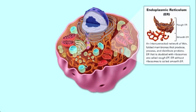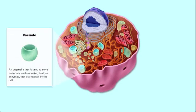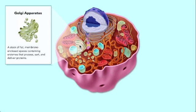Let's move on to vacuole. Vacuole organelles that are used to store materials such as water, food, or enzymes that are needed by the cell. Golgi apparatus, a stack of flat membrane-enclosed basins containing enzymes that process, sort, and deliver proteins.